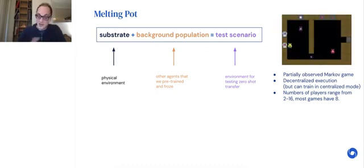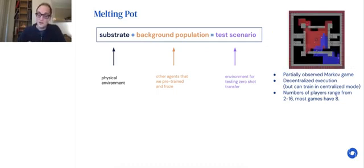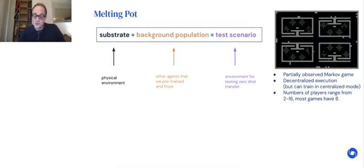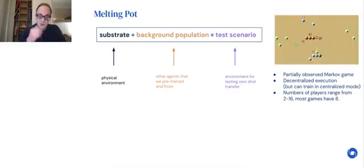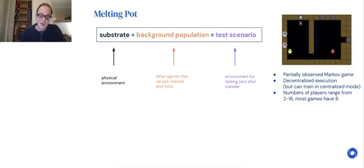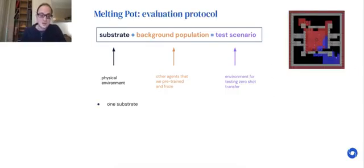At test time, you have to do it in decentralized execution mode, but you're allowed to train in a centralized mode. The numbers of players will range anywhere from 2 to 16, but most games have 8.